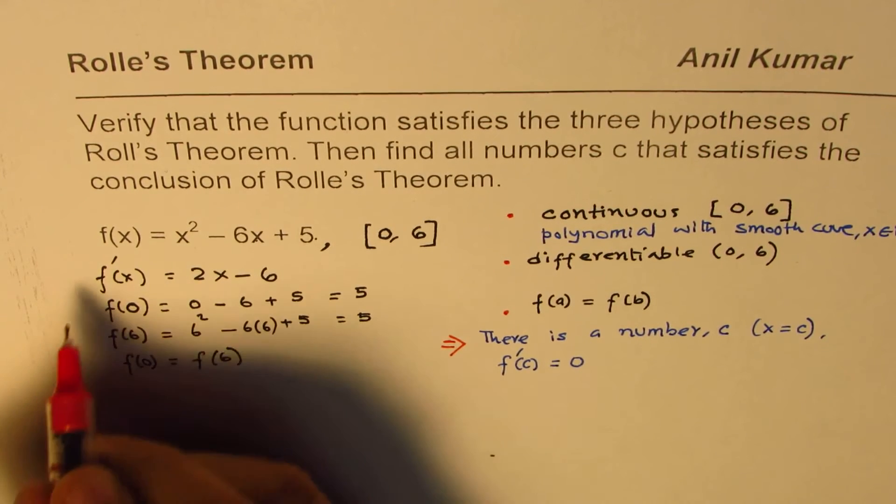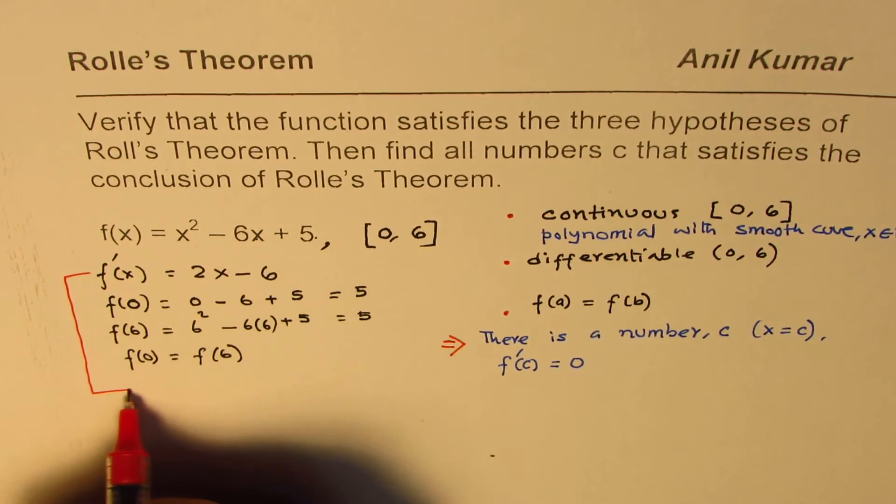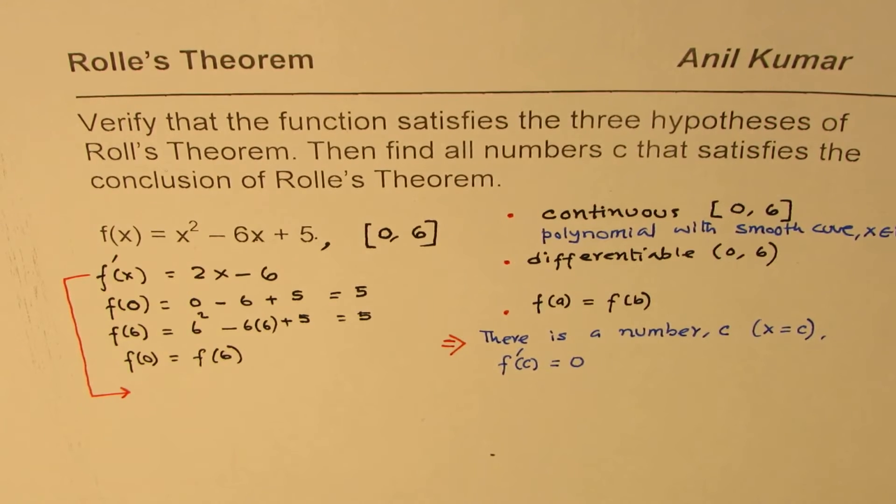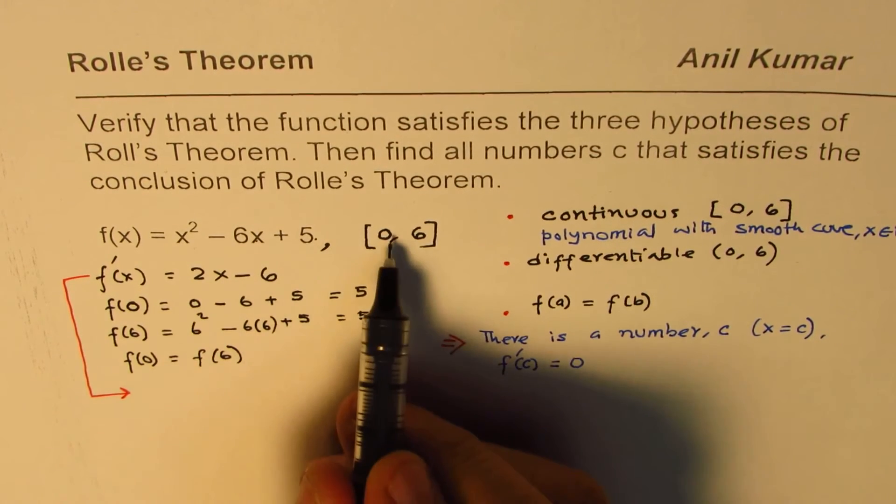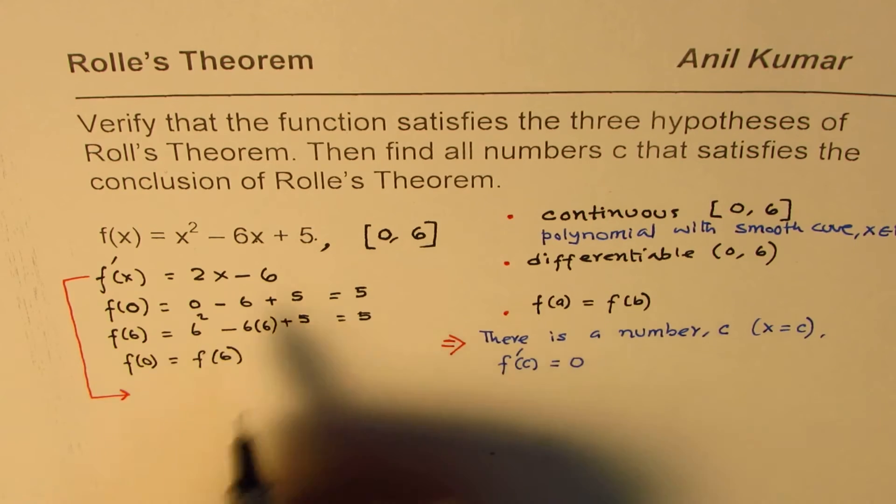So, we could verify that also. We know this is the derivative. And we'll equate this to 0 and figure out whether that point is between 0 to 6 or not.